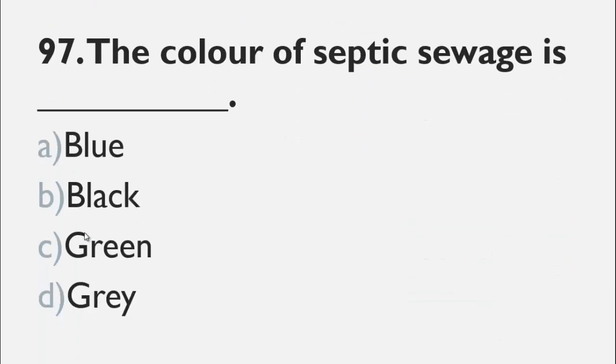MCQs number 97 is, the color of septic sewage is. The choices are a blue, b black, c green, and d gray. The color of septic sewage is black or dark brown. So, the right choice for this question is b black.